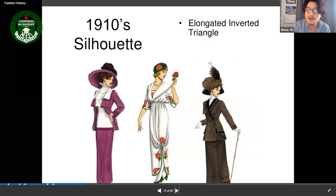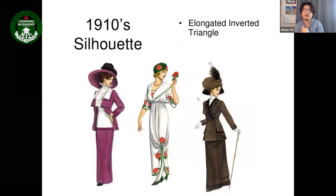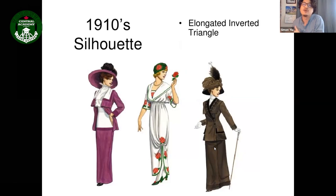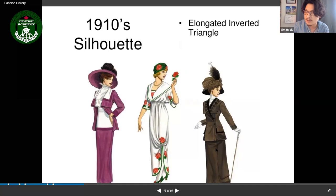The 1910s silhouette was a long inverted triangle — an upside-down triangle shape. Because women's rights were limited at the time, they couldn't show too much skin, so the silhouette was longer, stretched downward. That concludes the 19th-century overview.